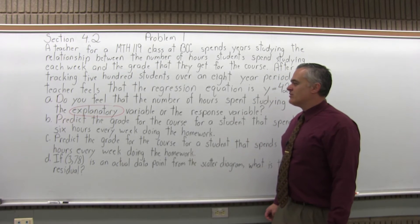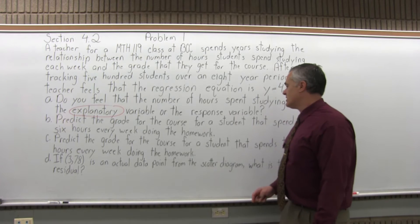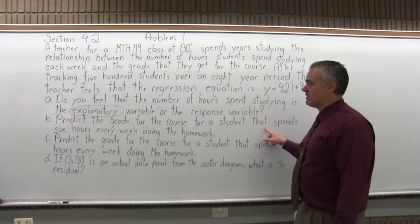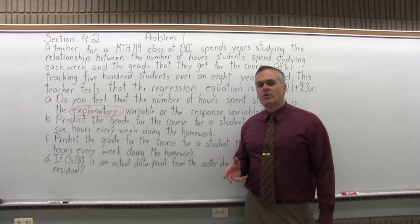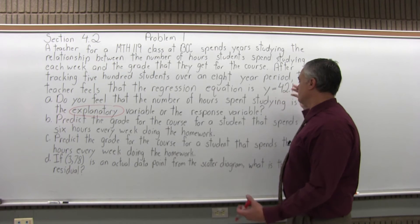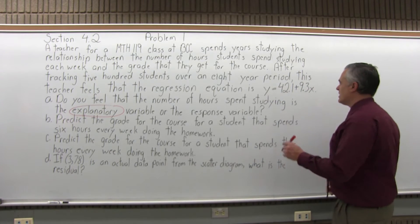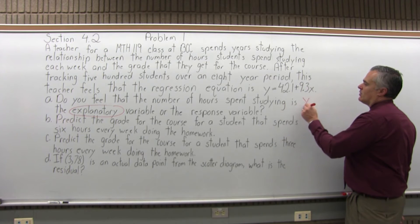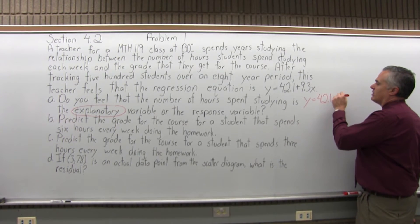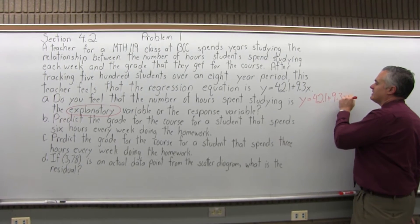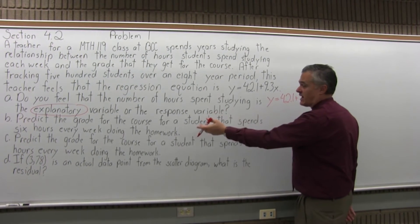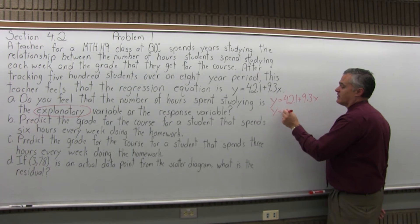Part B: Predict the grade for the course for a student that spends six hours every week doing the homework. So if you spend six hours a week on the homework, what can you expect for the grade based on this teacher's previous work? If my equation is Y equals 42.1 plus 9.3 times X, for part B the value of X is six. That's the number of hours that you spend studying. Put that in for X.